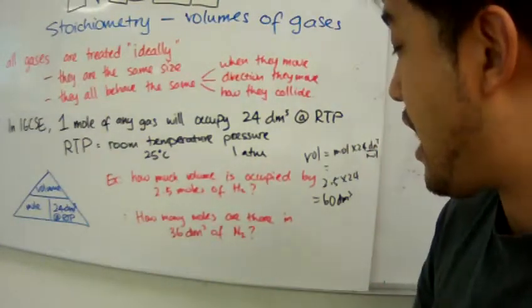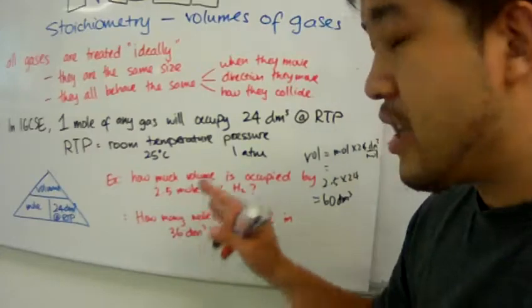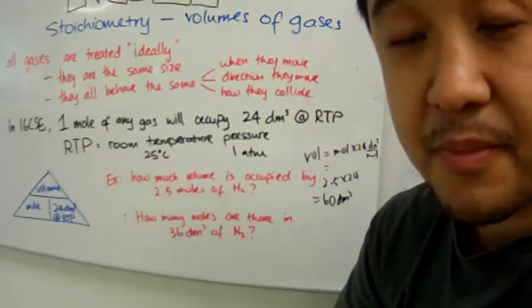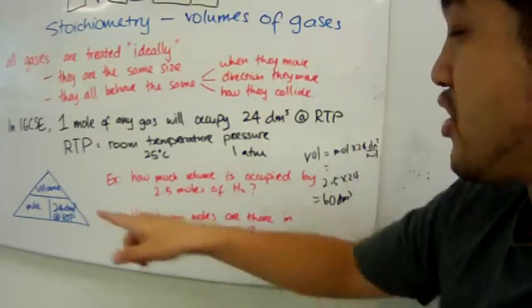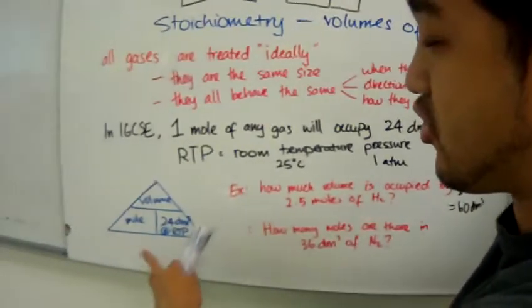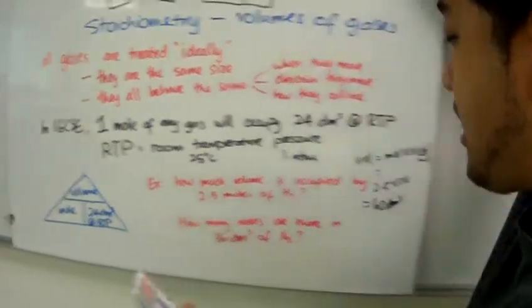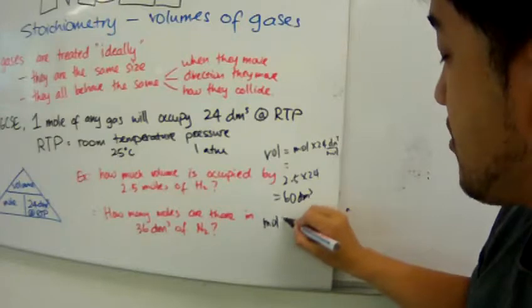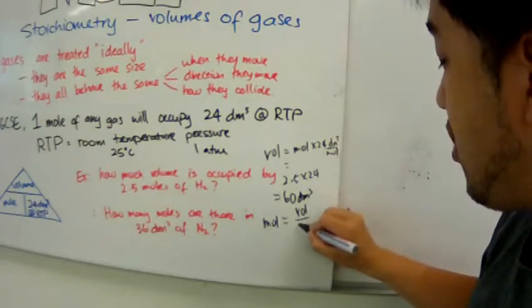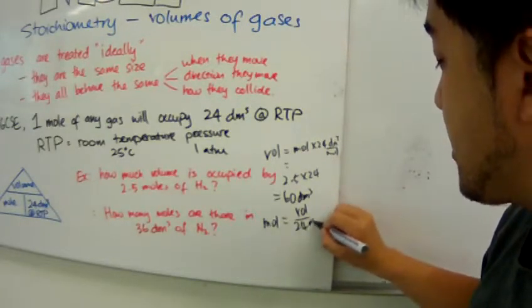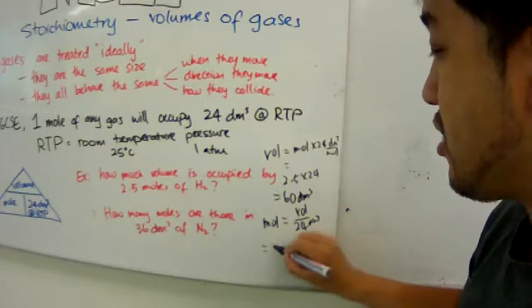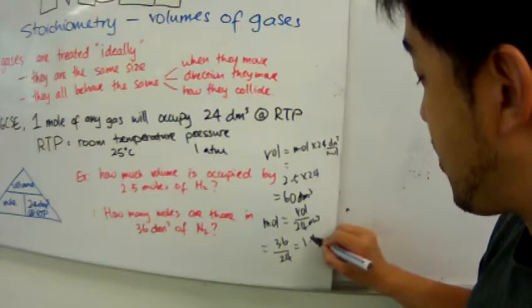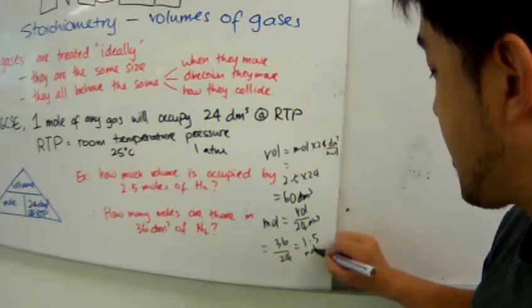Now, how many moles are there? Next question. How many moles are there in 36 cubic decimetres of nitrogen? Well, to do that, we are trying to find moles. And we will take volume. So moles equals to volume over 24 cubic decimetres. And so 36 divided by 24, and that should give me about 1.5 moles of nitrogen.